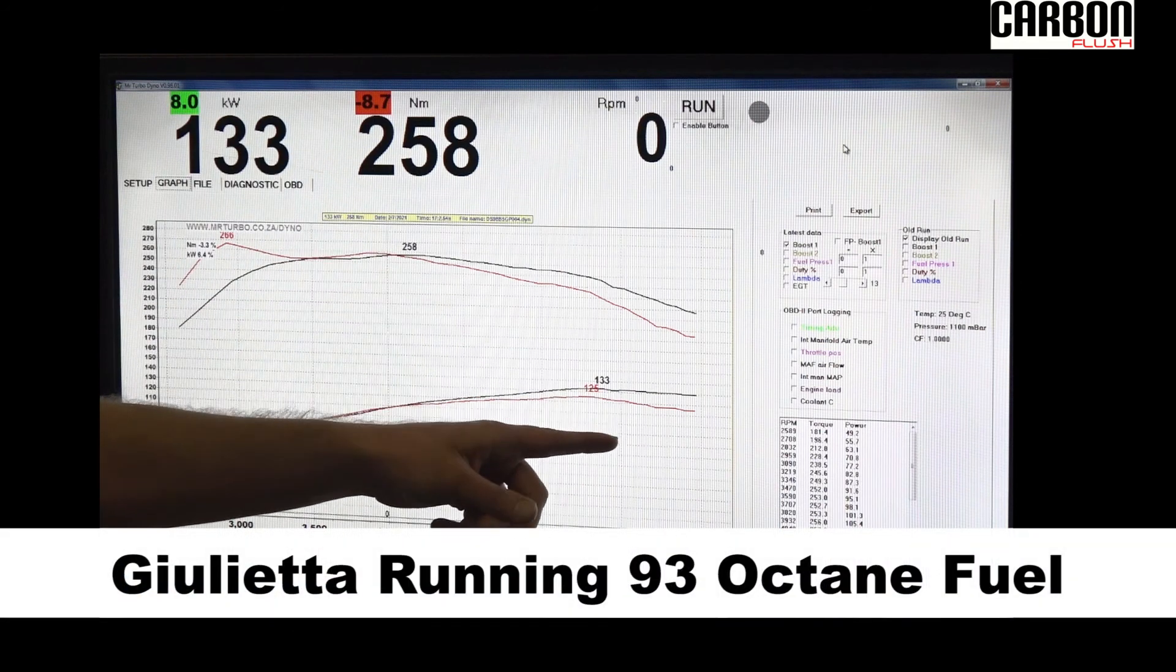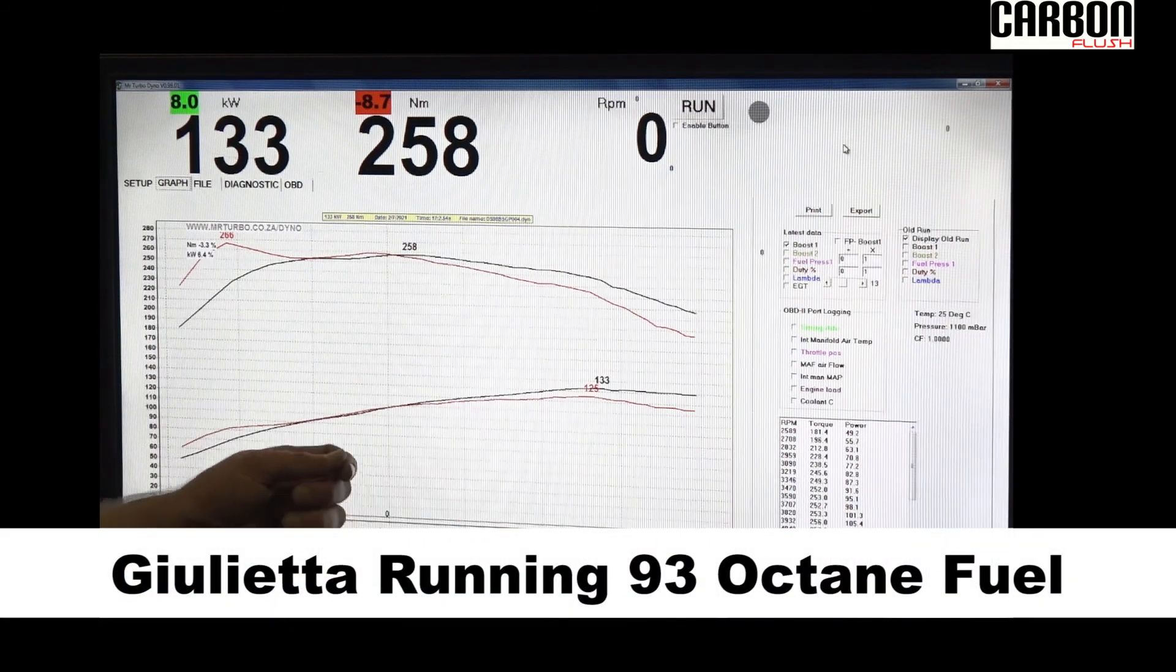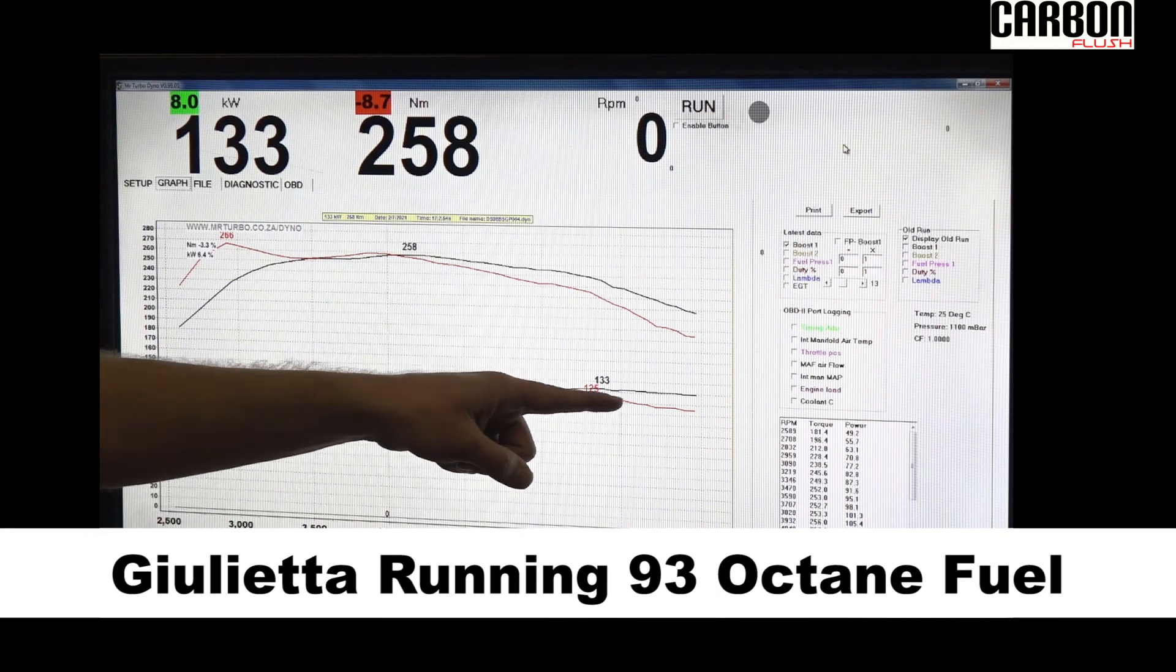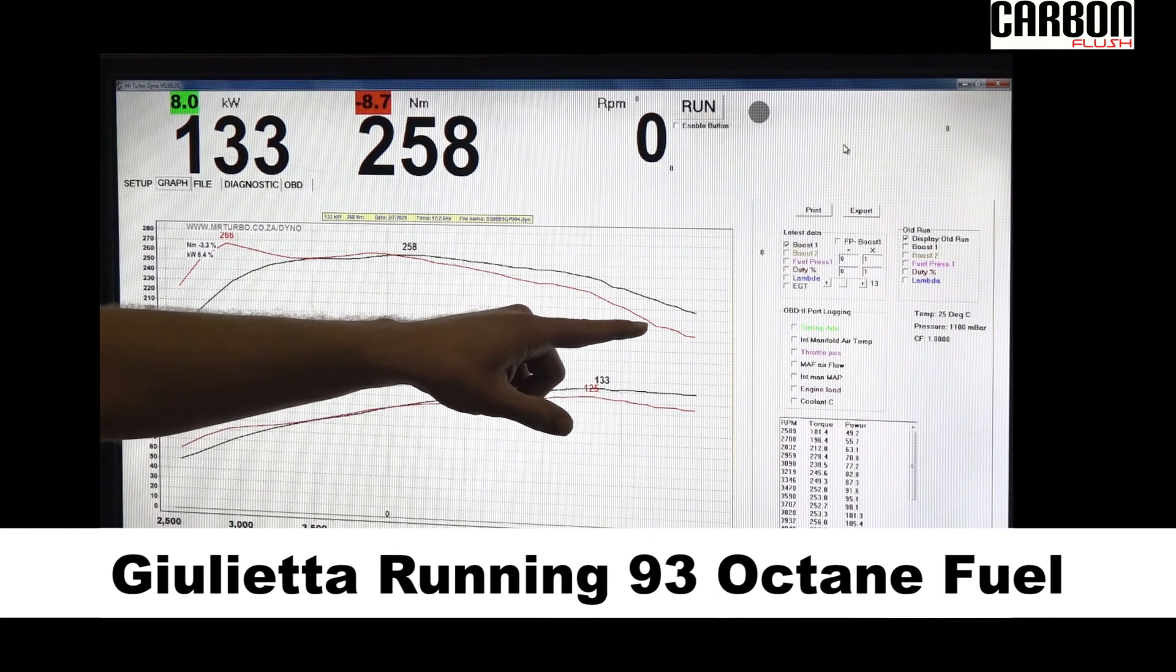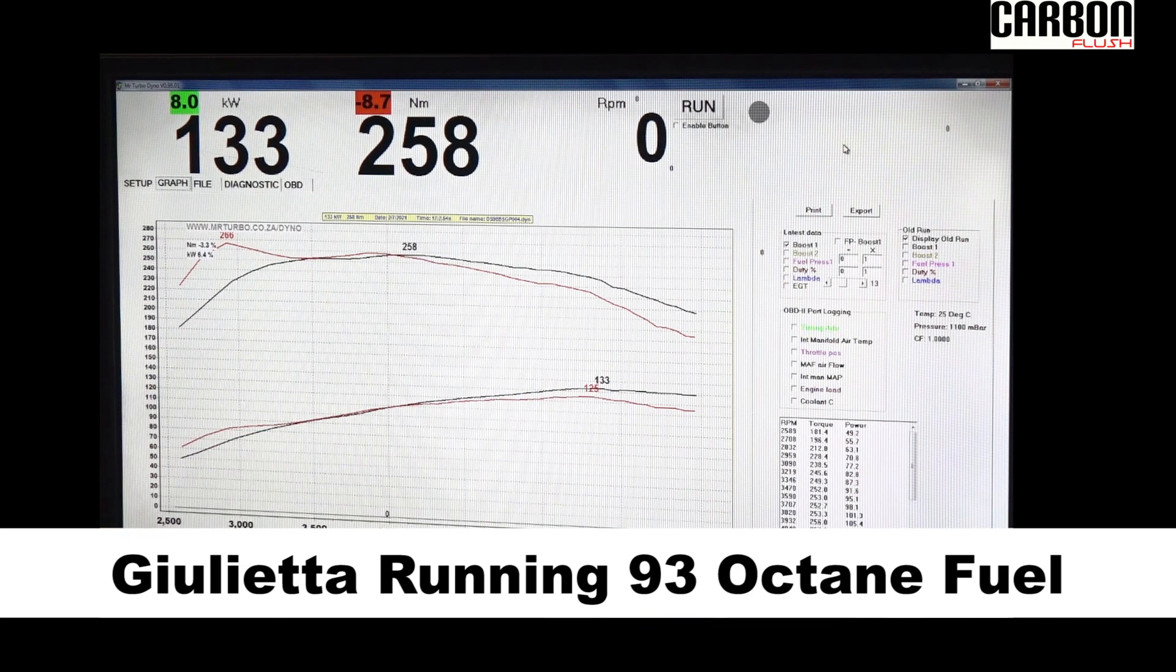At high RPM, let's say top RPM just before redline, we see an increase of about 12.5 kilowatts on the wheels and about 25 newton meters of torque.